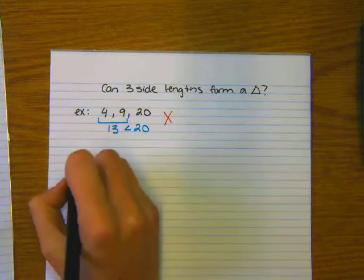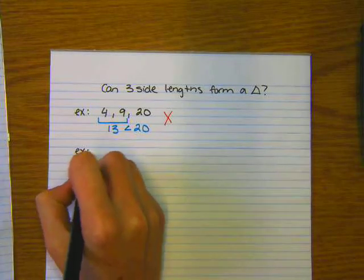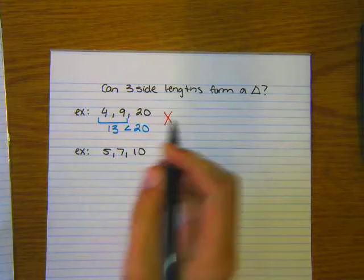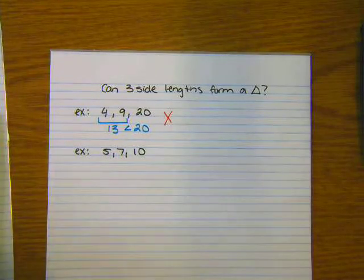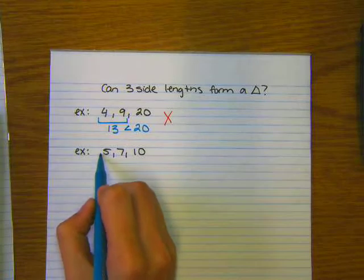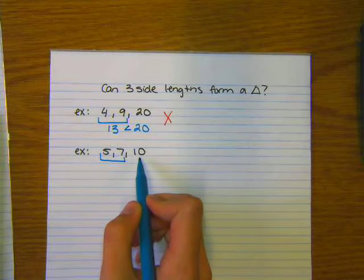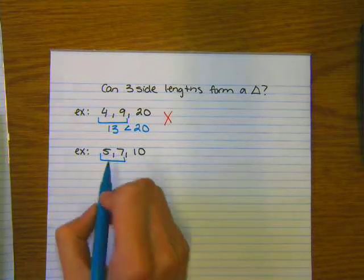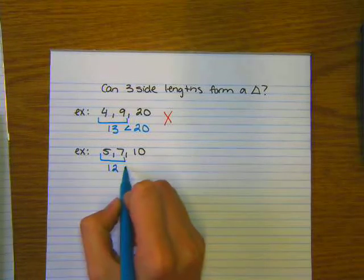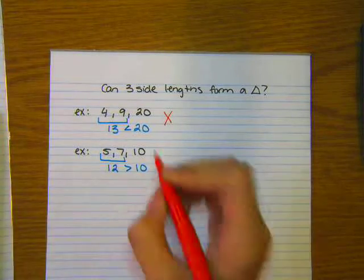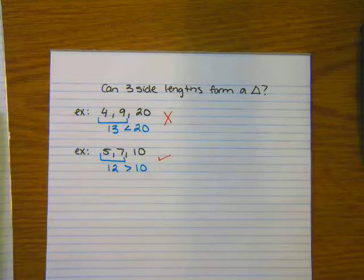If I were to give another example and say, for instance, my side lengths are 5, 7, and 10, identifying the two smaller side lengths, those are my 5 and 7, these two, the sum of these, must be greater than 10 in order for me to have a triangle. Well, 5 plus 7 is 12. 12 is greater than 10, therefore, yes, these three side lengths do form a triangle.